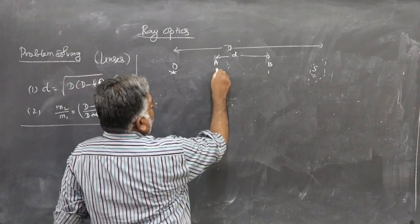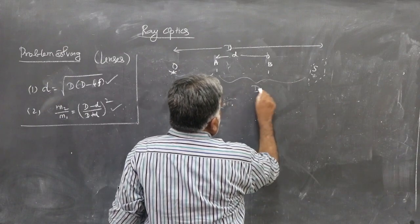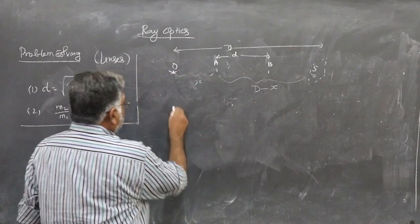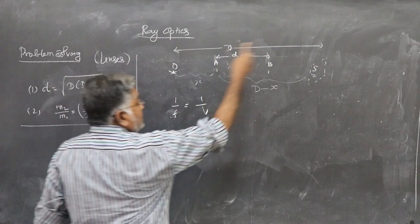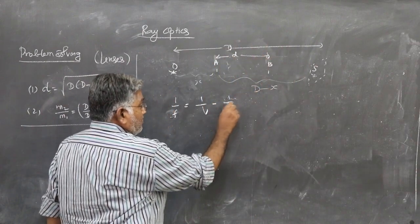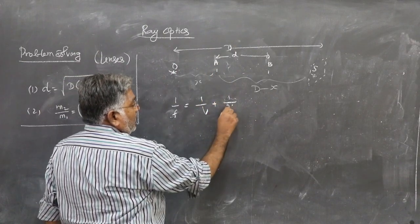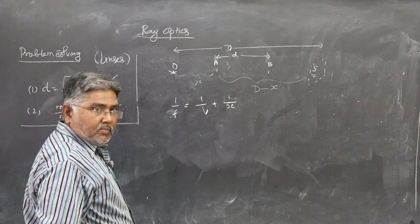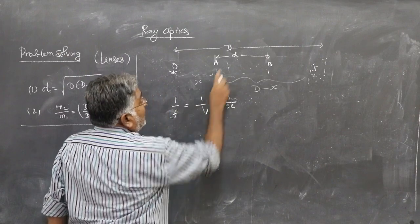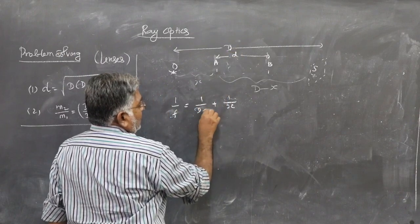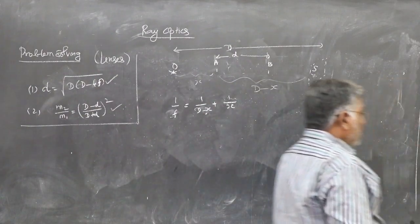To proceed, let the distance from O to the lens be x. Then obviously the image distance from the lens to the screen will be D minus x. Using the lens equation: 1/f equals 1/v minus 1/u. The focal length f of the convex lens is positive, the image distance v is positive and equals D minus x, and the object distance u is x — since the object is at distance x from the lens, it gives a term of plus 1/x.